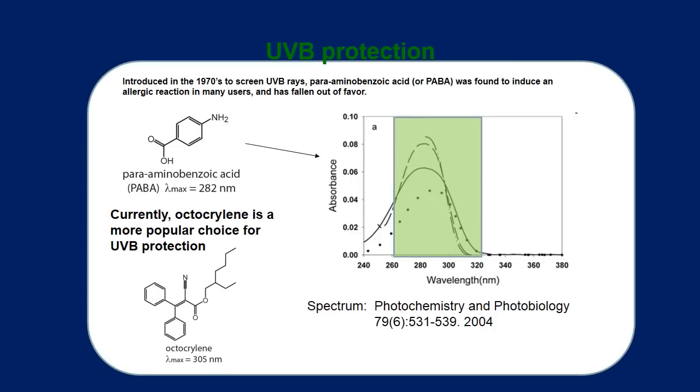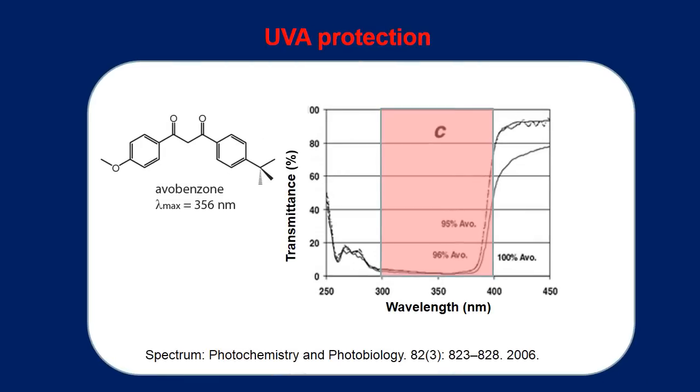In the case of UVB protection, there are some formulation ingredients available for us. One example of this is para-aminobenzoic acid, also known as PABA. The lambda max for this compound is about 282 nanometers, longer than that of ozone because it has a larger pi system. In the 1970s and 80s, sunblock formulations advertised that they were formulated with PABA because it was believed then that UVB was the most dangerous form of UV radiation and PABA blocked the UVB. However, a small amount of the population is allergic to this compound. And so currently, octocrylene is a more popular choice. Its structure is shown here on the bottom left. And as you can see, it also has a much larger conjugation than does ozone.